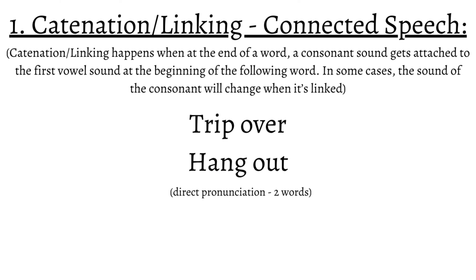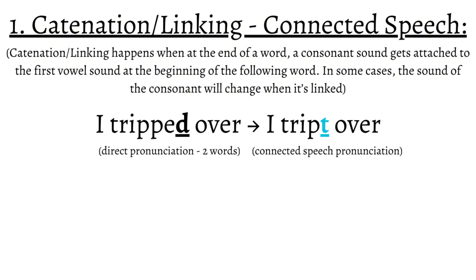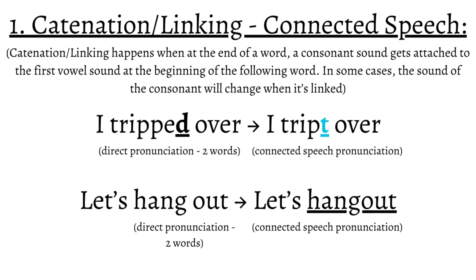Other examples are 'trip over' and 'hang out.' These are prepositional verbs, and they make sense when directly said, but when put in conversation they will sound like one word. If I say 'I tripped over,' the consonant sound D will sound like T, so the sounds are linked: 'I tripped over.' If I say 'let's hang out,' I am not splitting the pronunciation, and therefore 'hang out' sounds like one word: 'let's hang out.'